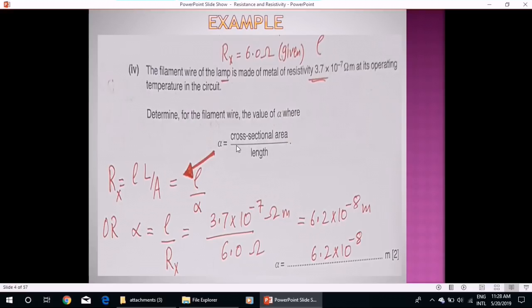Now using the same expression R is equal to rho L over A, we will substitute instead of L over A, we will substitute alpha, and we get this expression: R will be equal to rho over alpha, or alpha will be equal to 6.2 into 10 raised to the power minus 8 meter.